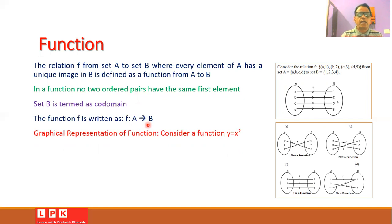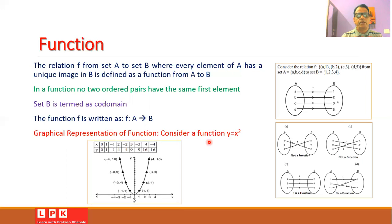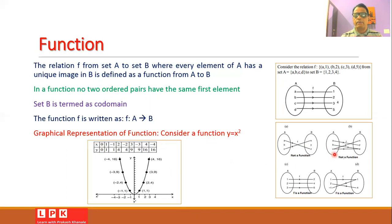It is also possible to describe the function graphically. For example, the function y = x² can be plotted for different values of x to compute y, and when we connect all such points we can represent the function graphically. In the examples shown, the first figure is not a function because element b does not have any image. The second figure is also not a function because element c has multiple images. Figure c is a function because it satisfies the basic definition of a function, and figure d is also a function for the same reason.